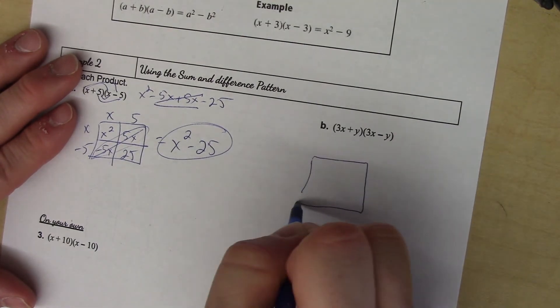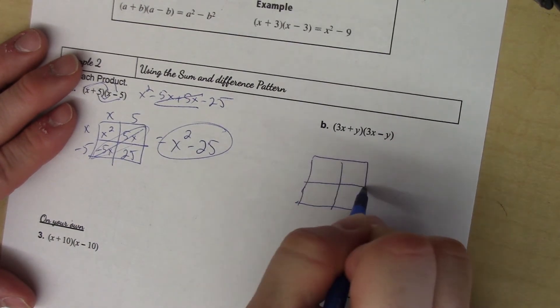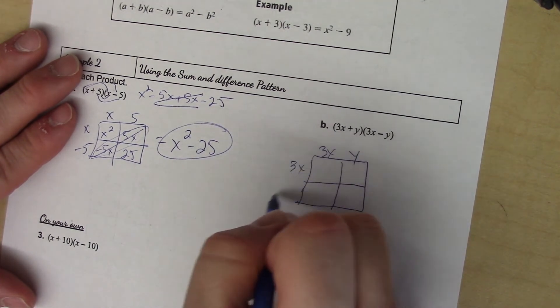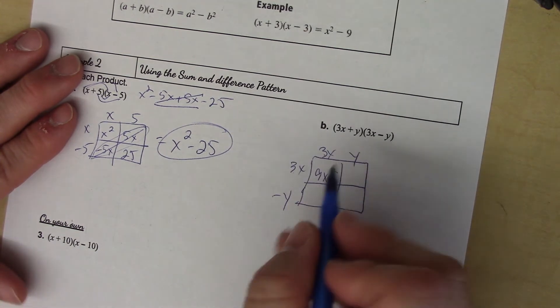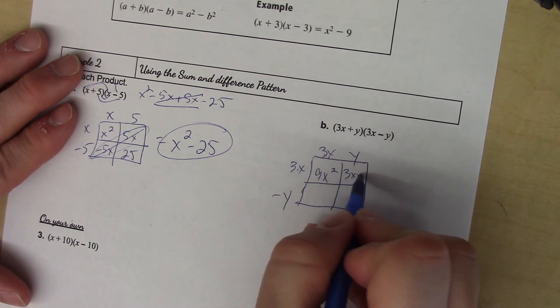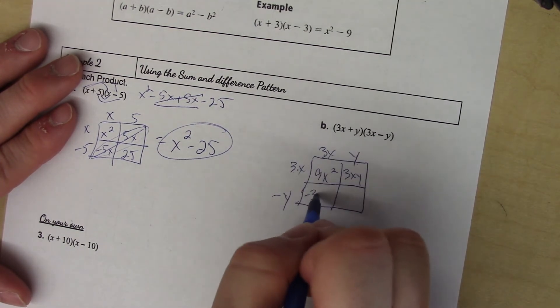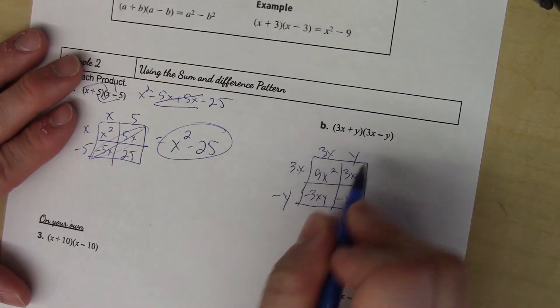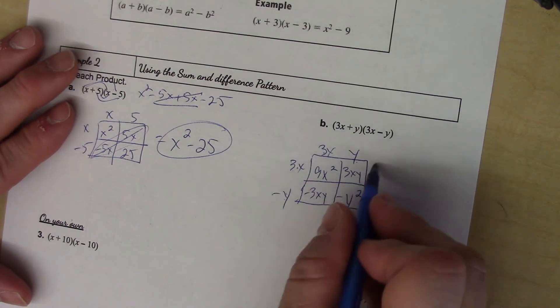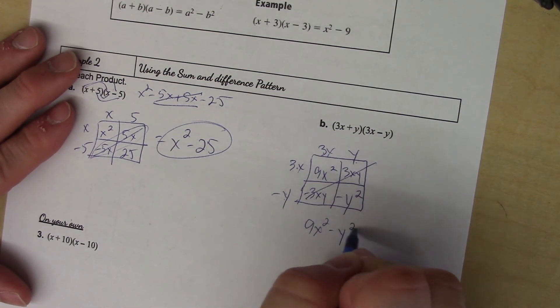On the second one here, same thing. I'm just going to use the box again, and I'm not picking the box because it's my preferred method, I'm just trying to bounce back and forth between both. 3x times 3x is 9x², 3x times y is 3xy, 3x times -y is -3xy, and negative times positive is -y². Look again, those cancel - it's just 9x² - y². That's it, that's the answer.